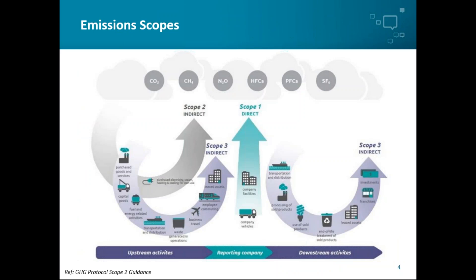To give some context on the different emissions scopes and how scope 2 market-based emissions fit within that: the GHG protocol categorizes emissions in three broad categories. Scope 1 emissions are direct emissions from fuel use in company vehicles and facilities — for example, natural gas used in boilers for heating, or diesel and petrol used in company cars. Scope 2 emissions are generated by acquired and consumed electricity, steam, and heating or cooling — in other words, the energy you buy from your suppliers and use on your sites. Scope 2 emissions are considered indirect emissions as they're generated by your energy suppliers upstream of your operations.